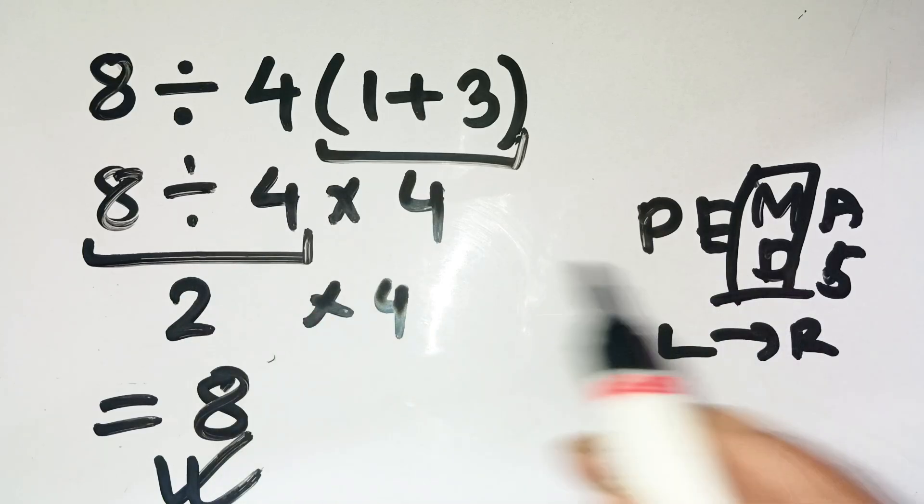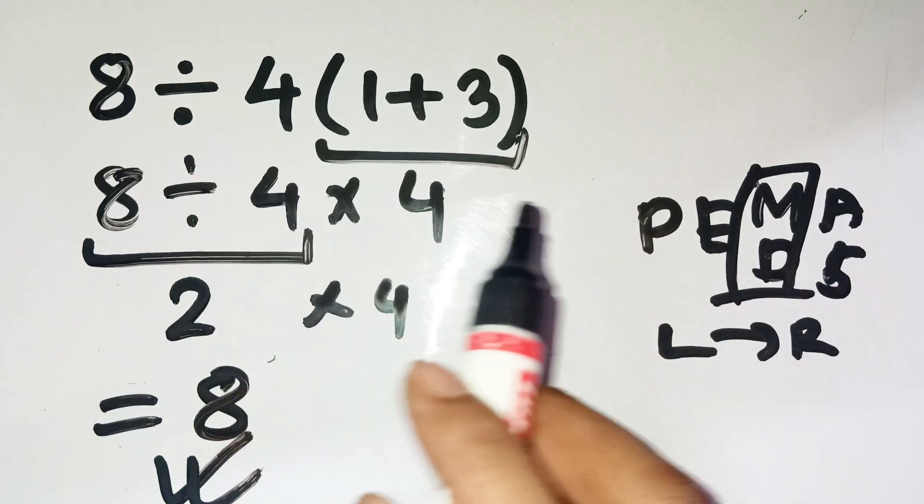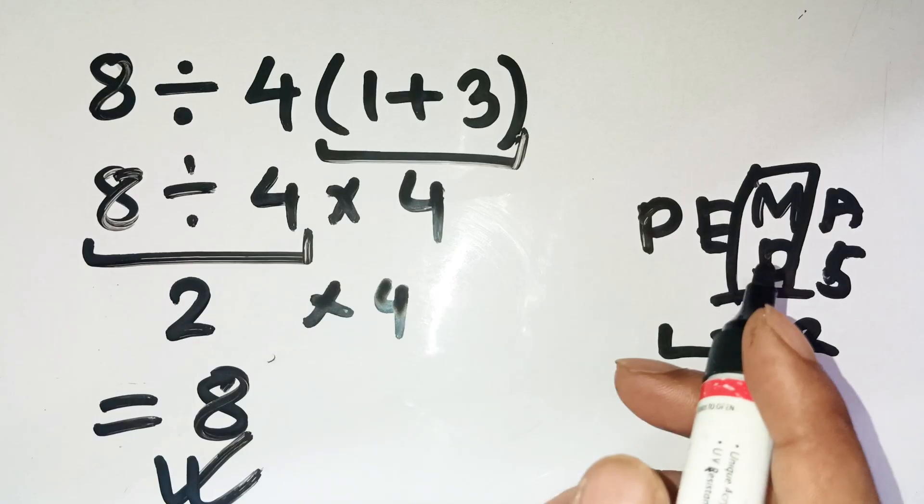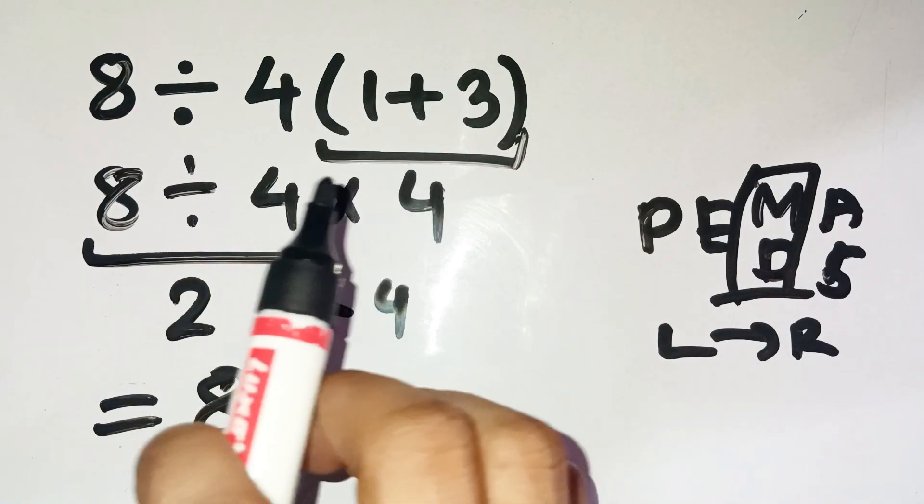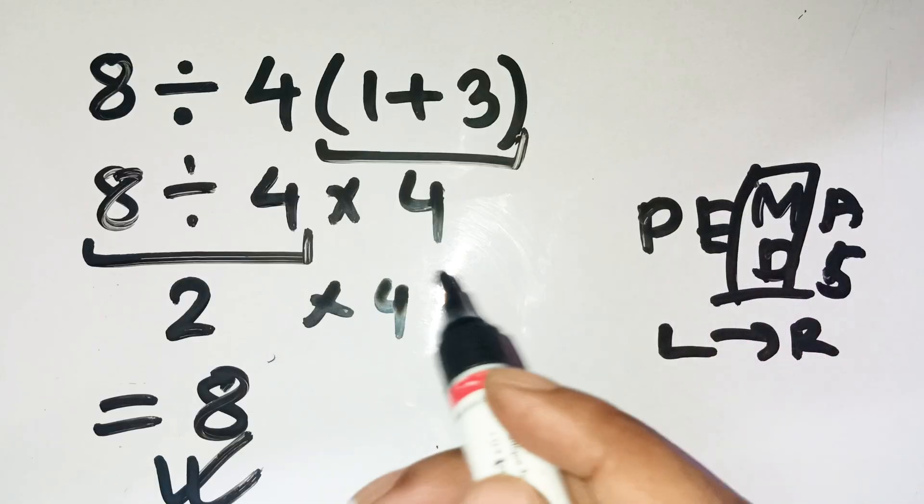Let's visualize it. Imagine you have 8 candies and you're splitting them into 4 equal groups. That gives you 2 candies per group. Now if each group multiplies by 4, boom, that's 8 again.